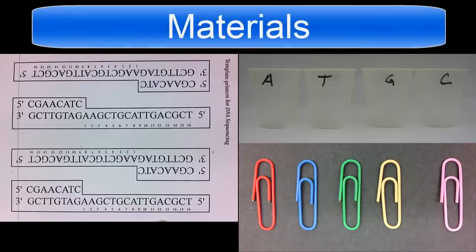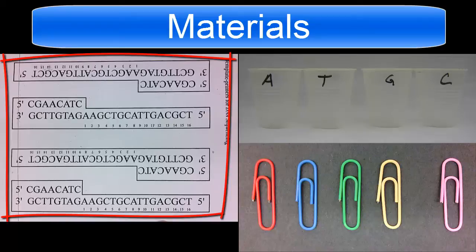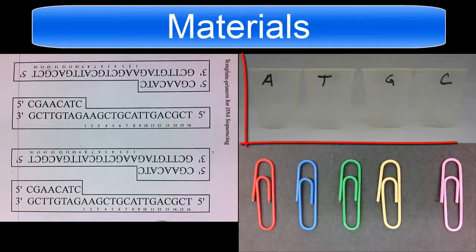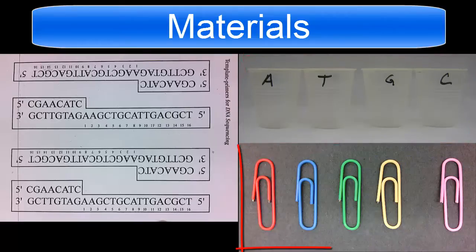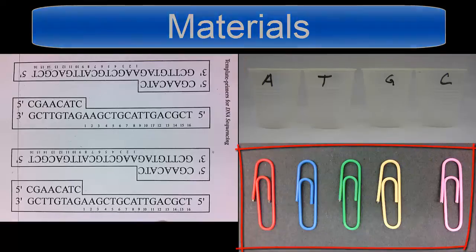To model the DNA sequencing process you will need a sheet with four copies of the DNA primer templates, four different cups labeled A, T, G, and C, and you will need five different color paper clips.